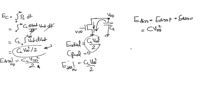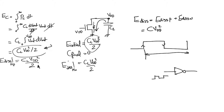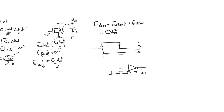This energy C_L · V_DD² was dissipated during two transitions — one rising and one falling. If we assume the inverter has a periodic clock signal (a square wave), then the time between two identical transitions is the clock period T. So this energy was dissipated in time T, and the average power dissipated is C_L · V_DD² / T. Since 1/T equals frequency F, the average power is C_L · V_DD² · F.